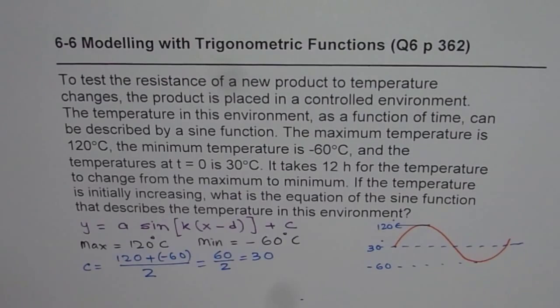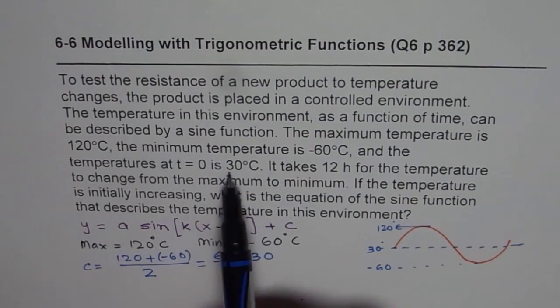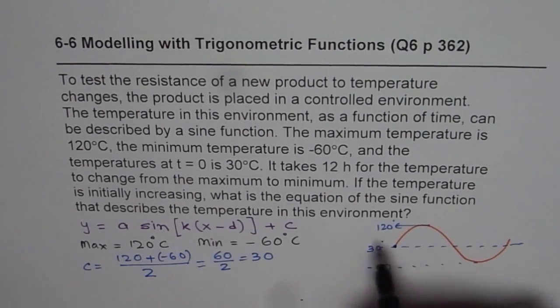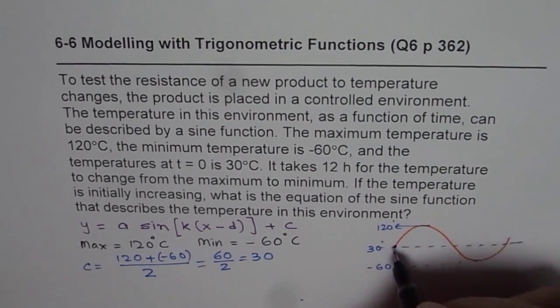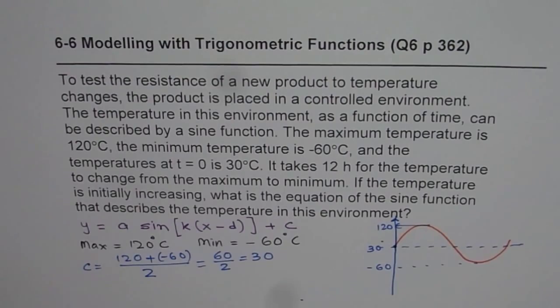At t equals 0, temperature starts from 30 degrees. So the function starts from here itself and it goes upwards. Our y-axis is along this side. That means there is no phase shift, or I can say d is equal to 0 for us.